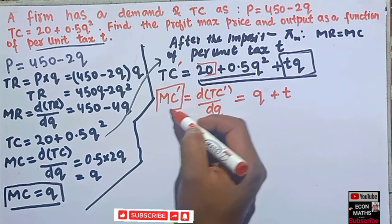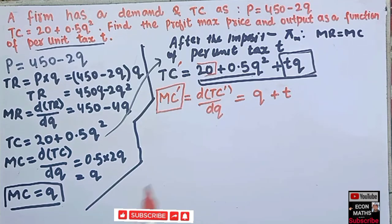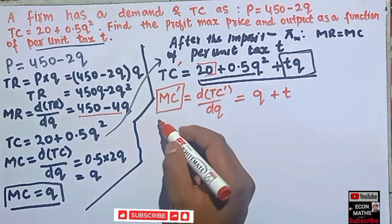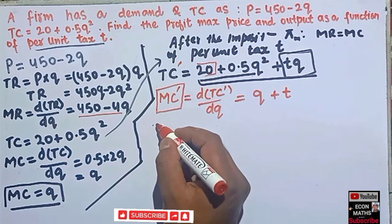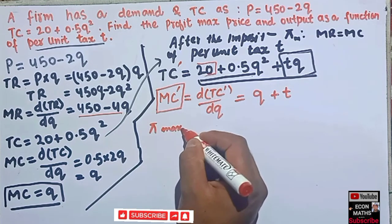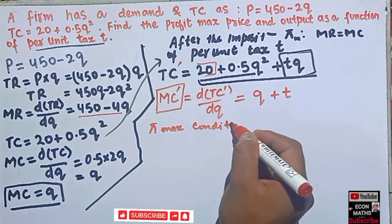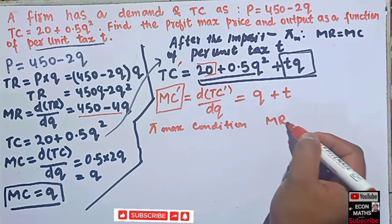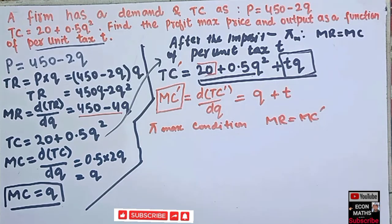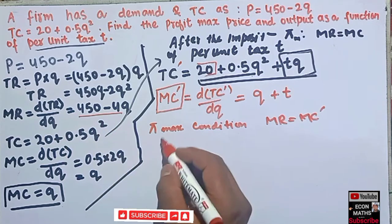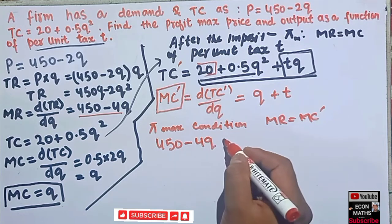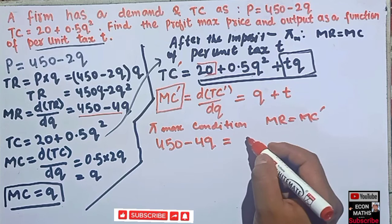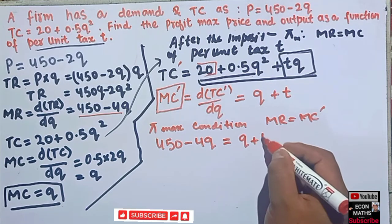We will now equate this new marginal cost with our marginal revenue. The profit maximization condition requires MR = MC'. Our marginal revenue is 450 minus 4q and we equate it with our new marginal cost q plus t: 450 minus 4q = q + t.